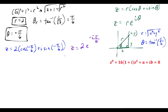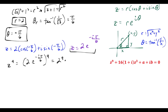So we need z to the ninth power. Taking the Eulerian form and raising both sides to the ninth: (2e to the negative i pi over 6) to the ninth equals 2 to the ninth times e to the negative 9i pi over 6. Simplifying: 2 to the ninth is 512, and the exponent negative 9i pi over 6 simplifies to negative 3 pi over 2 times i. So we have 512e to the negative 3 pi i over 2.